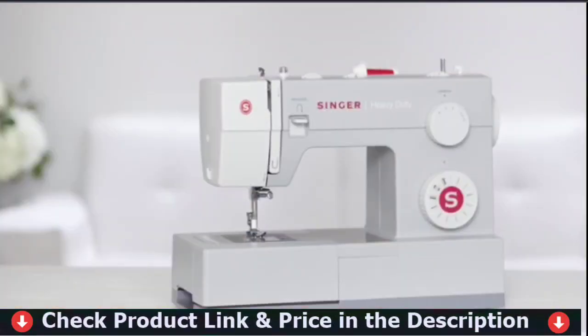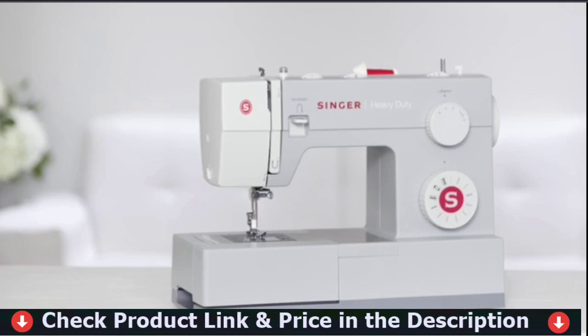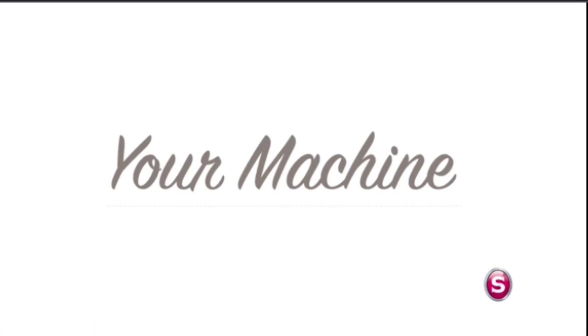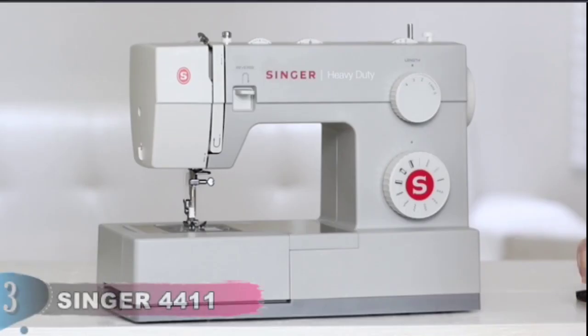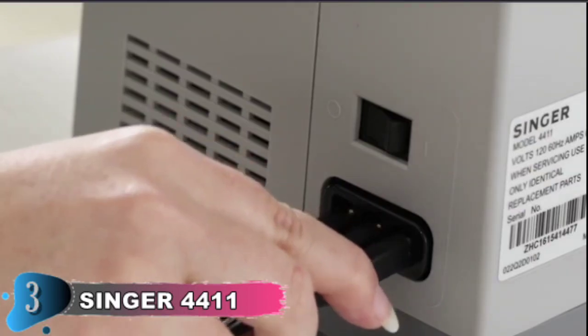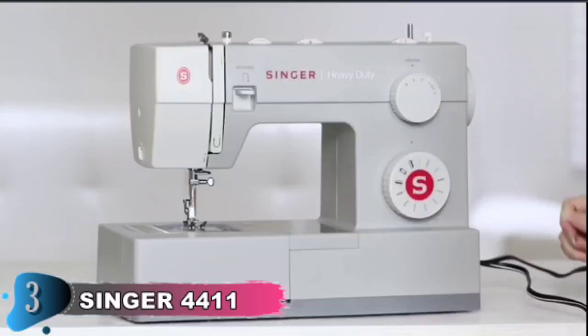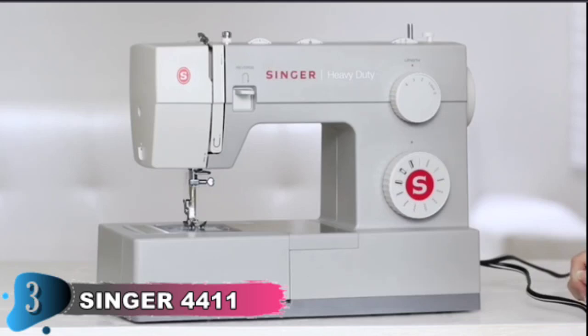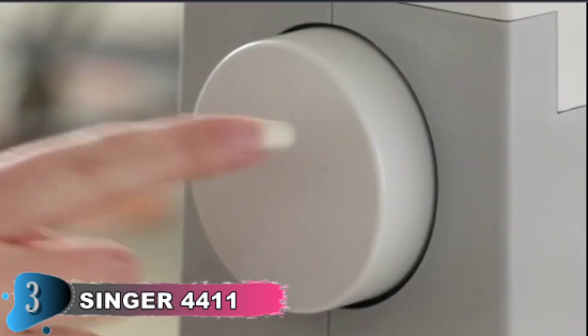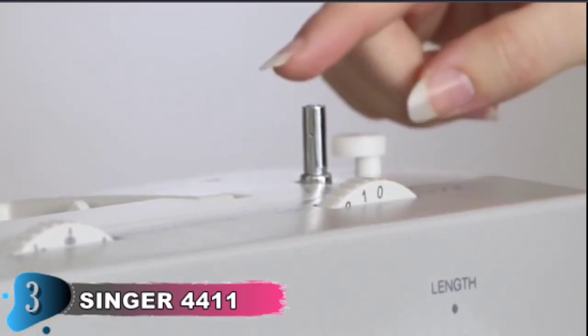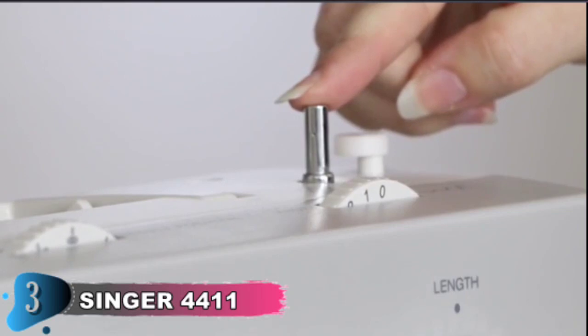The heavy-duty metal frame adds stability, and with a strong motor, sewing a higher quantity of items more quickly and efficiently at 1,100 stitches per minute is achievable. Sew very lightweight and heavyweight fabrics with ease by adjusting the presser foot pressure. The Singer Heavy Duty 4411 is a true workhorse. With a heavy-duty metal interior frame, stainless steel bed plate, extra-high sewing speed and powerful motor, the Singer Heavy Duty 4411 can sew a wide range of fabrics.